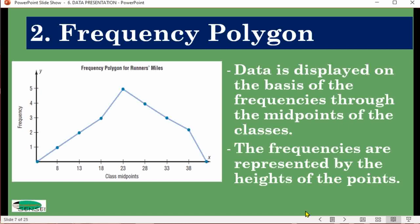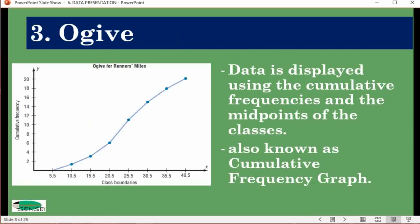The last one is ogive. Ogive is like a timeline where you still connect the midpoints of the datasets. However, instead of using just the regular frequency, you use cumulative frequencies and connect the graphs, so that's why it's also known as cumulative frequency graph.